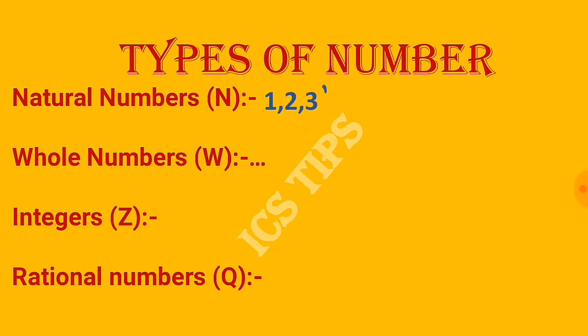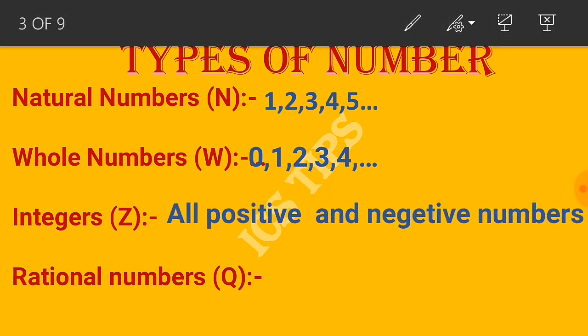Natural numbers start from 1, 2, 3, 4, 5 and continue onwards infinitely. Whole numbers include zero along with all natural numbers.